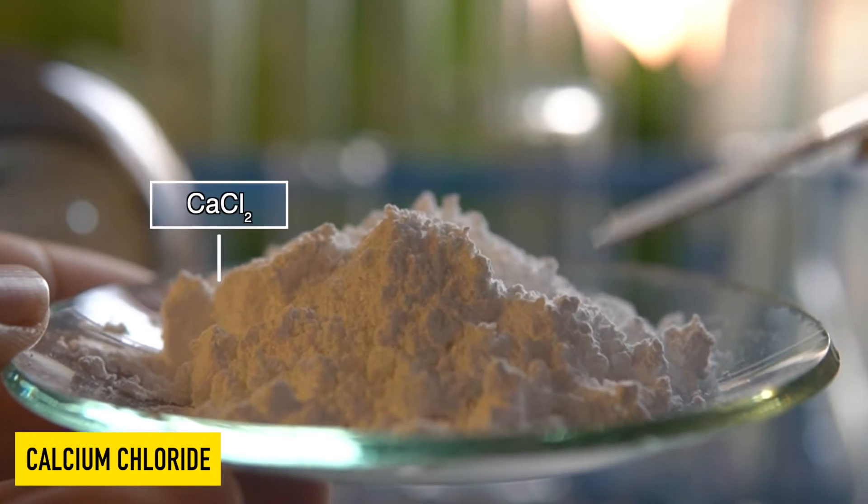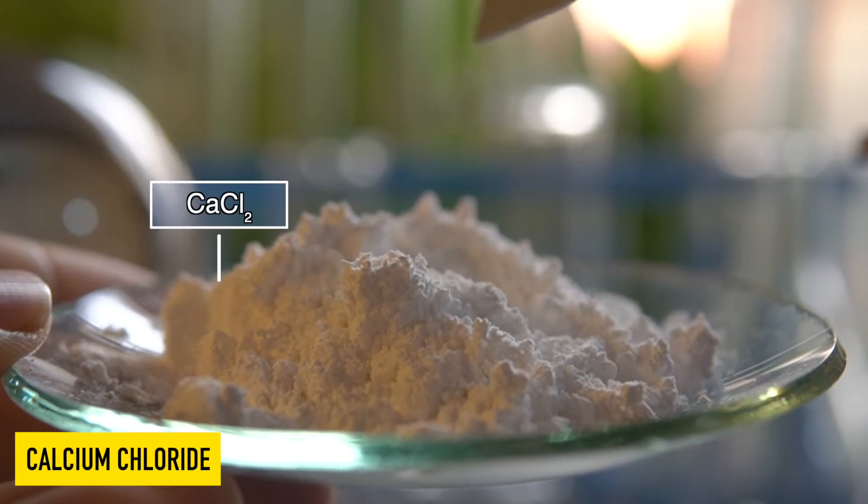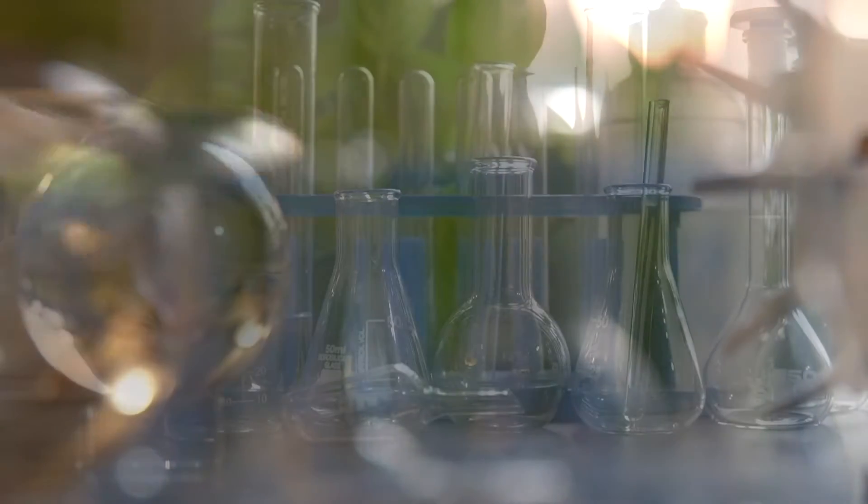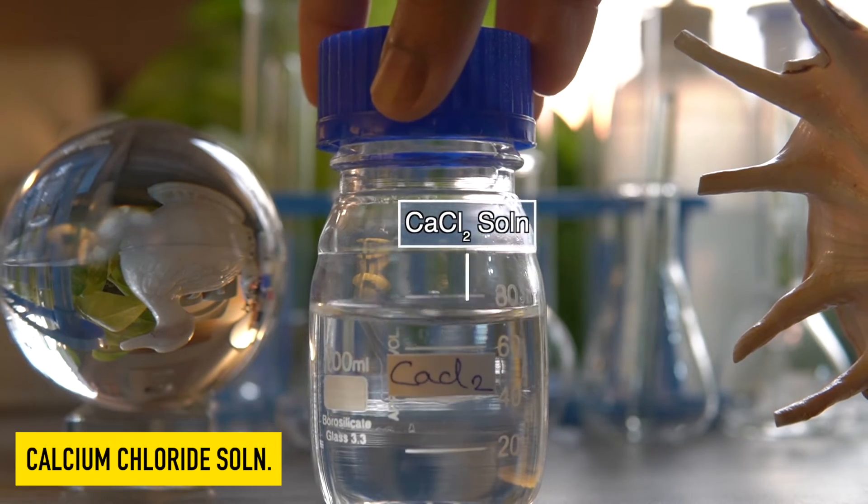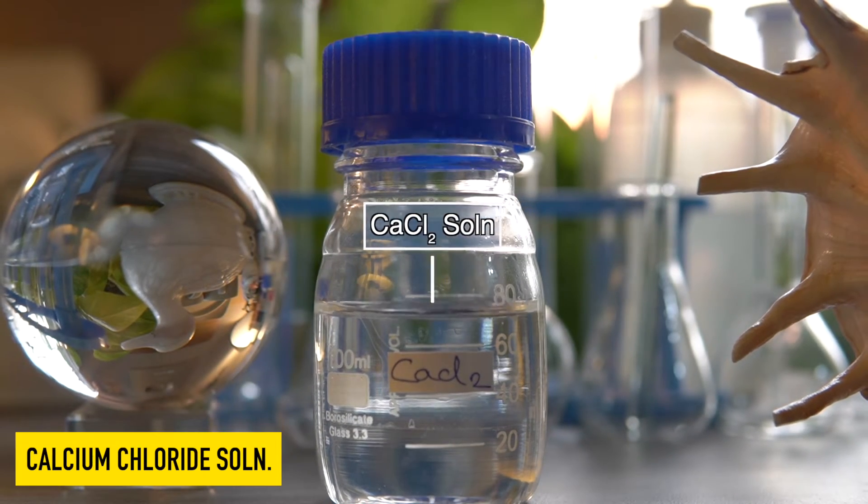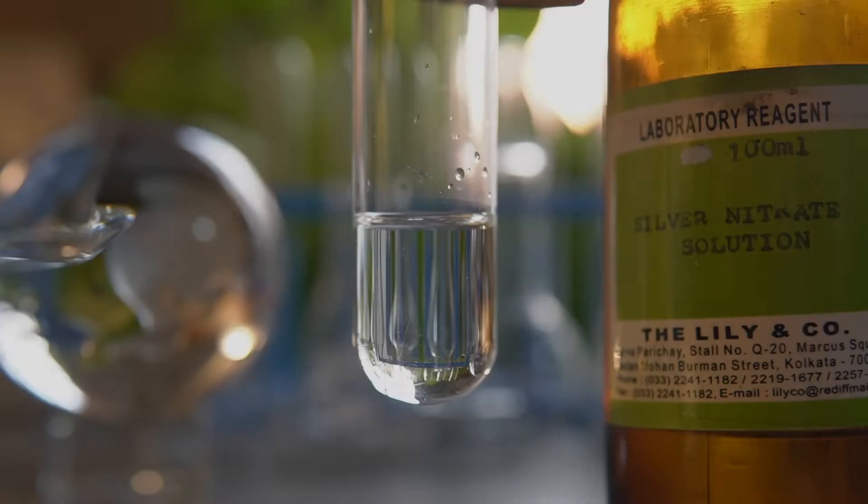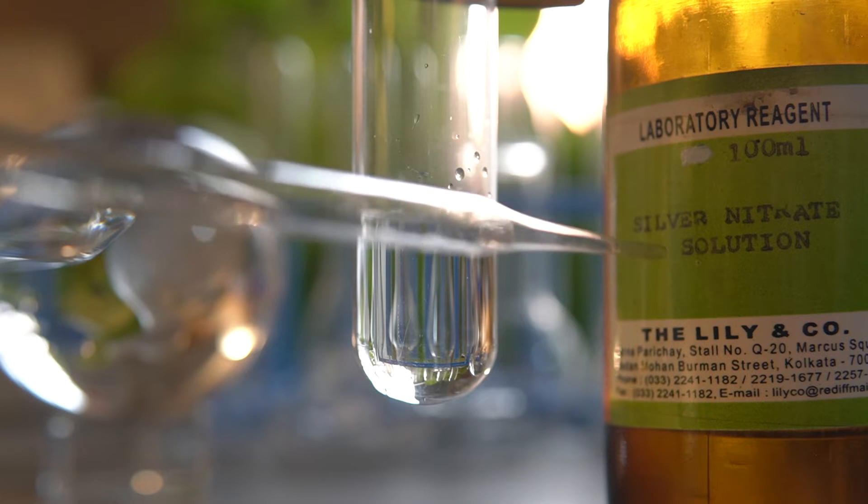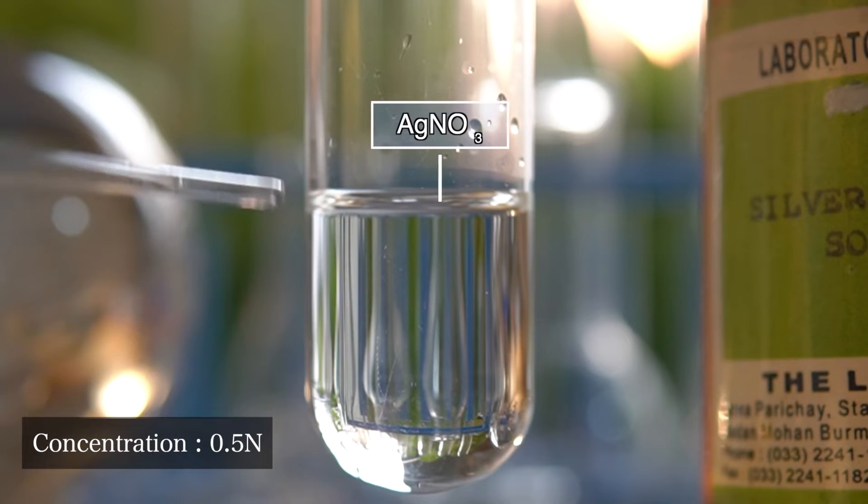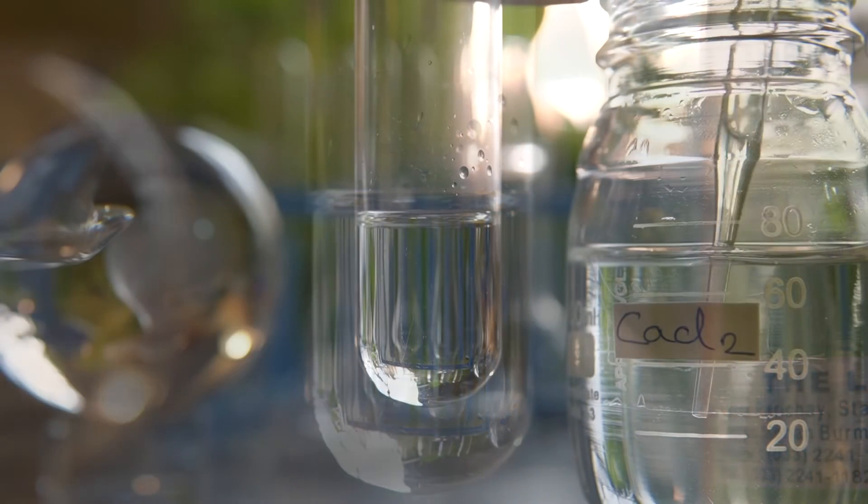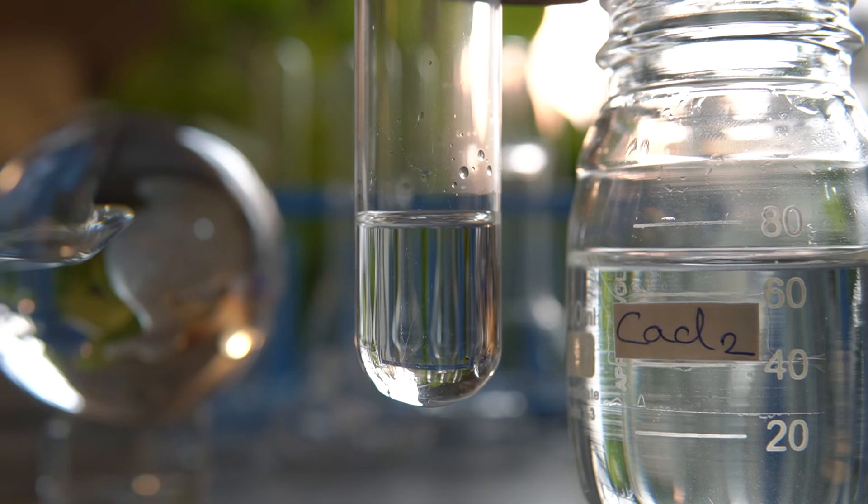substance and highly soluble in water, which means we can make its solution very easily. Now to initiate the chemical reaction, we will take some amount of 0.5N silver nitrate solution into this test tube. Now we will add